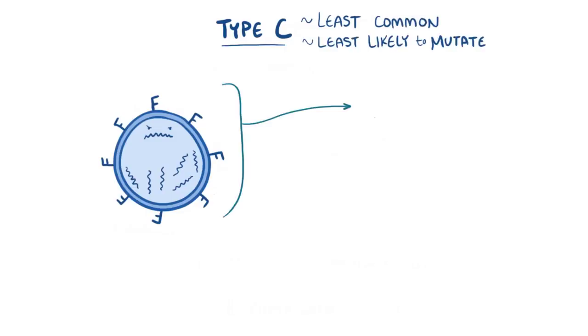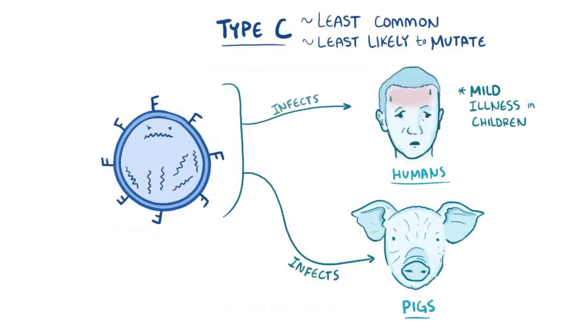Influenza C usually causes mild disease in children, and unlike type B, it can infect both humans and pigs. Rather than hemagglutinin and neuraminidase, type C influenza uses a hemagglutinin-esterase fusion protein to enter and exit cells.